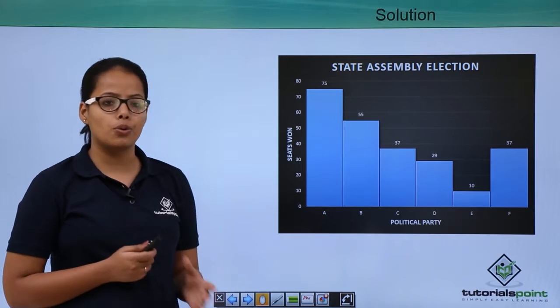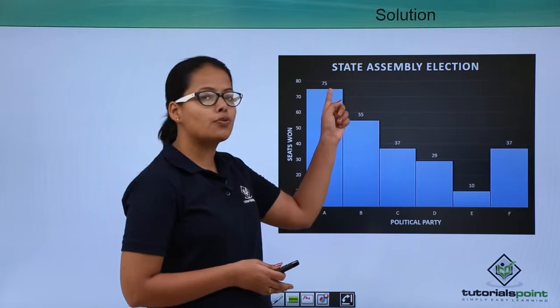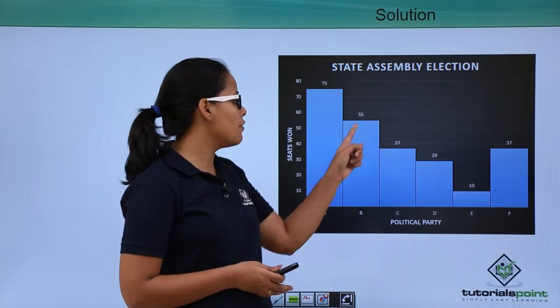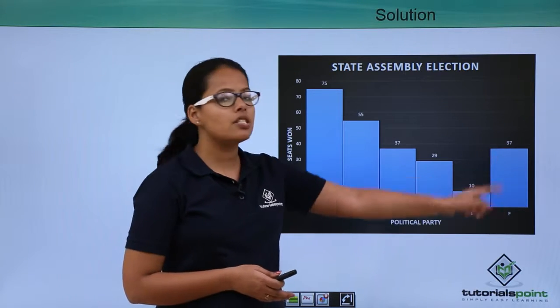This is going to be the bar graph. As you know, this data is ungrouped data. For political party A, seats won is 75. For B, it is 55. For C, it is 37. For D, it is 29. E, it is 10. And F is 37.